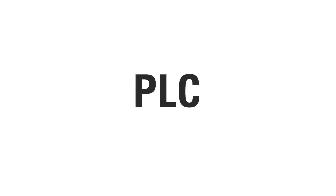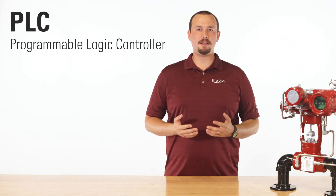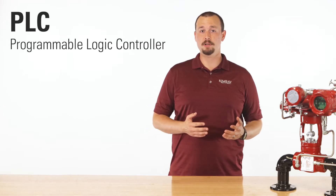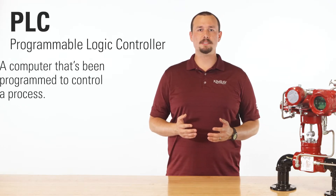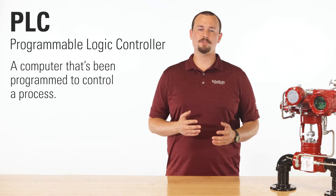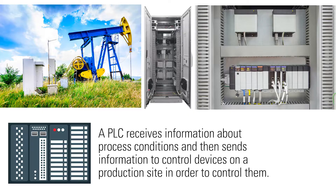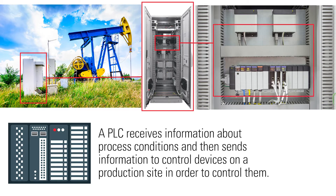The first term we want to go over is PLC. A PLC, which stands for Programmable Logic Controller, is a computer that's been programmed to control a process. A PLC receives information about process conditions and then sends information to a control device on a production site in order to control them.